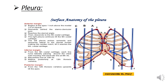The inferior margin descends inferolaterally to cross the eighth rib at the midclavicular line, the tenth rib in the mid-axillary line, and the twelfth rib level with the 12th thoracic spine. The posterior margin ascends from a point two centimeters lateral to the spine of the 12th thoracic vertebra up to the dome of the pleura.